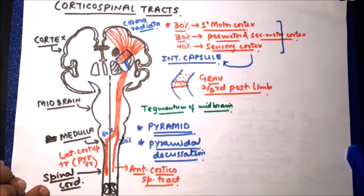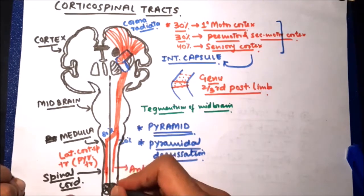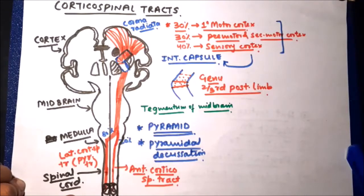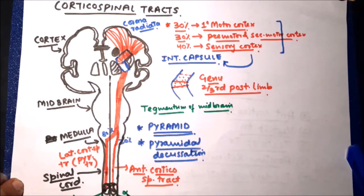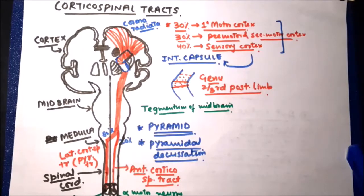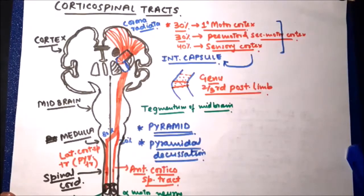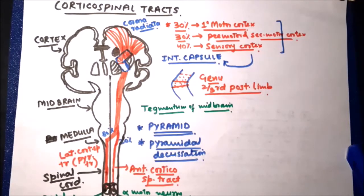Both the anterior and lateral corticospinal tracts end in the spinal cord at the anterior horn cells, which innervate muscles — specifically ending at alpha motor neurons. The fibers of the lateral corticospinal tract end at alpha motor neurons innervating distal muscles, whereas the anterior corticospinal tract fibers end at alpha motor neurons innervating proximal muscles.